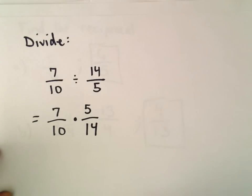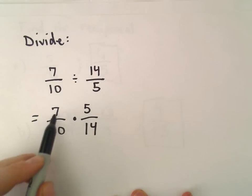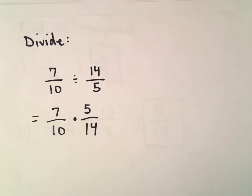Now we're back to just multiplication problems. We could just multiply 7 times 5 and then 10 times 14. But I see that I can actually do a lot of simplification first by thinking about common factors.